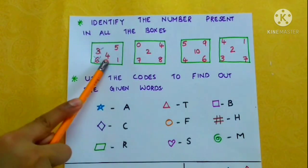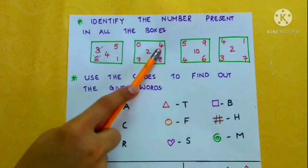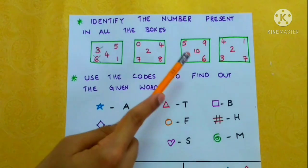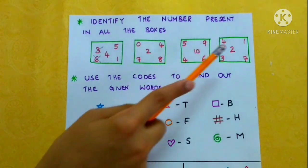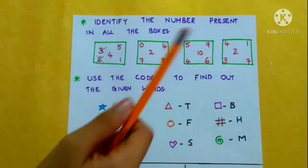Now let's check four. Four is there in this box, it's also there in this box, and this box, and this box. So four is the number which is there in all the boxes.